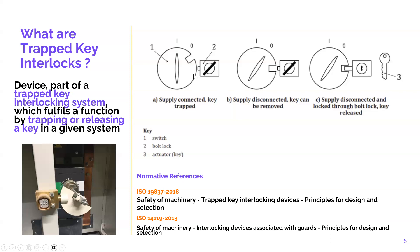We have three elements: a switch — let's imagine a main switch — represented as the actuator; a bolt lock (item number two); and a key that is trapped into the bolt lock. We imagine that the machine is on and the supply is connected. We are going to turn the machine off by operating the switch, which will allow us to trap and lock the switch and then release the key. That is how we operate a switch with an interlock.